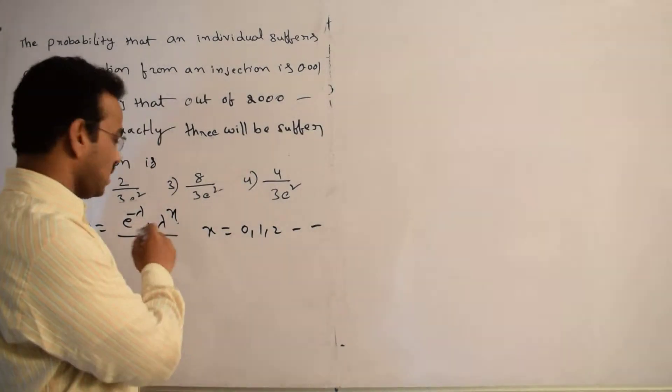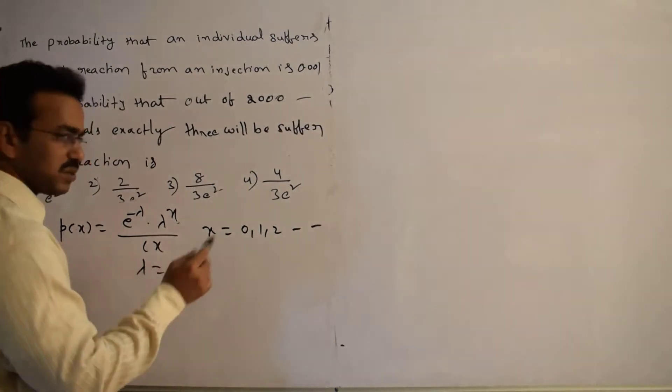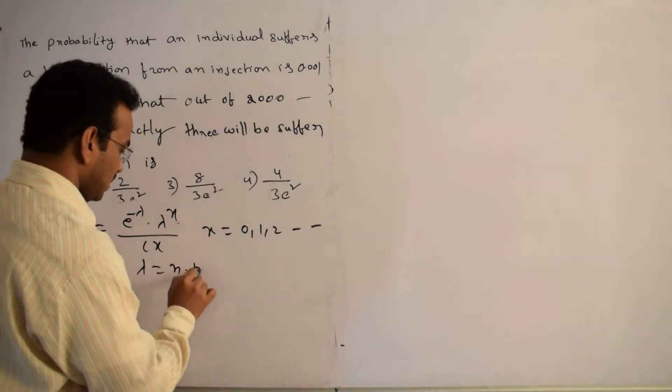So now, what is the parameter in Poisson distribution? Lambda value. Let me write here: lambda equals Np, N times p. N is the number of samples.